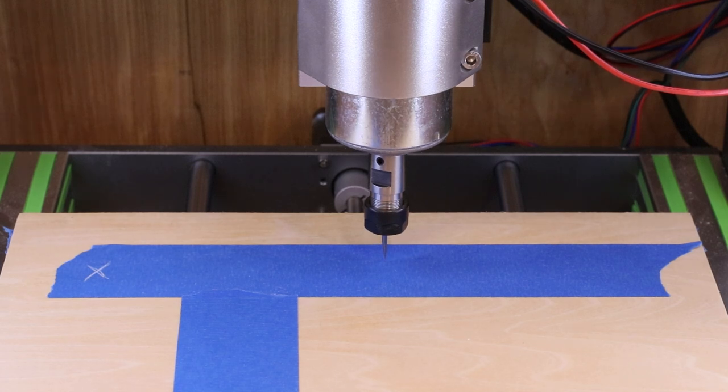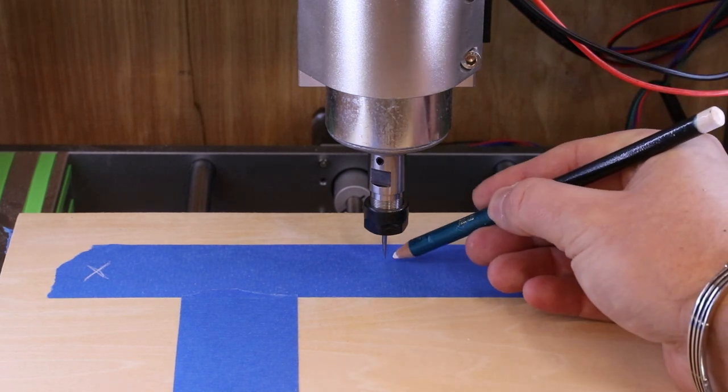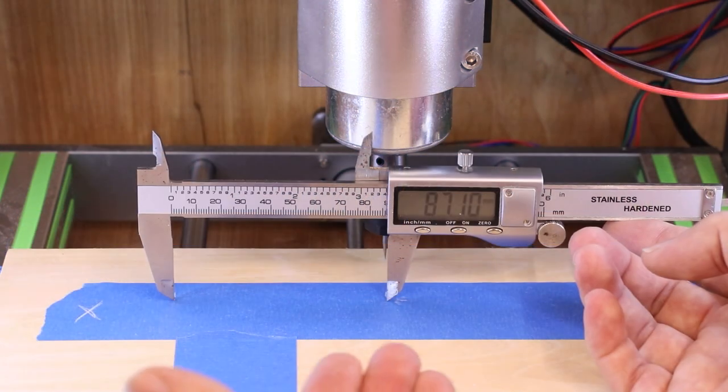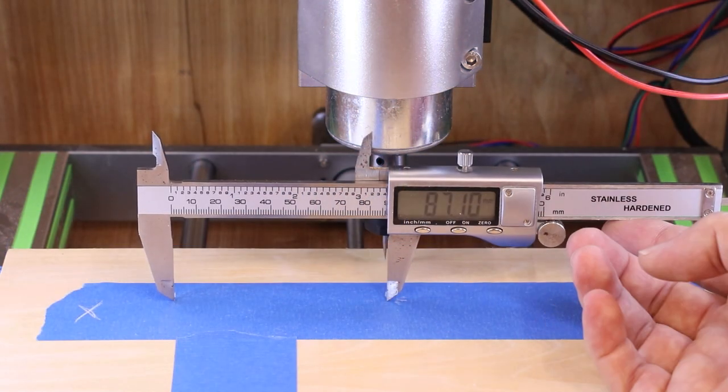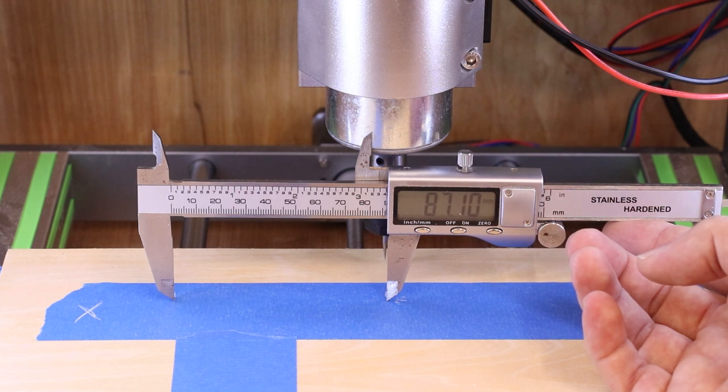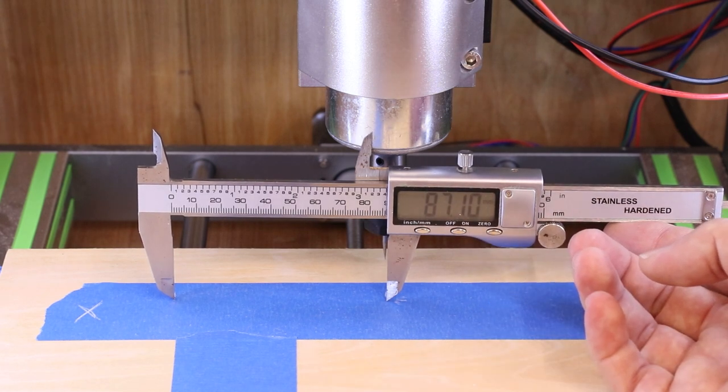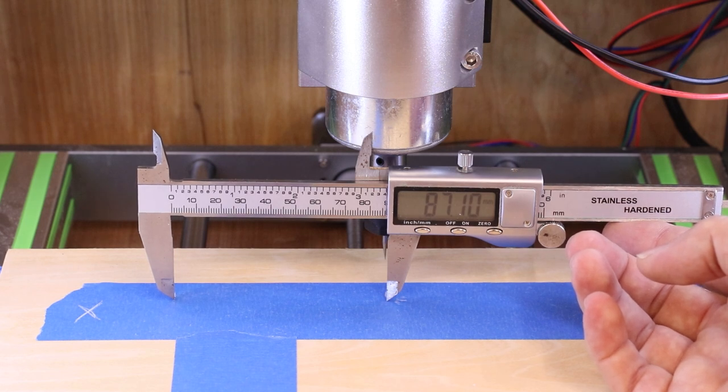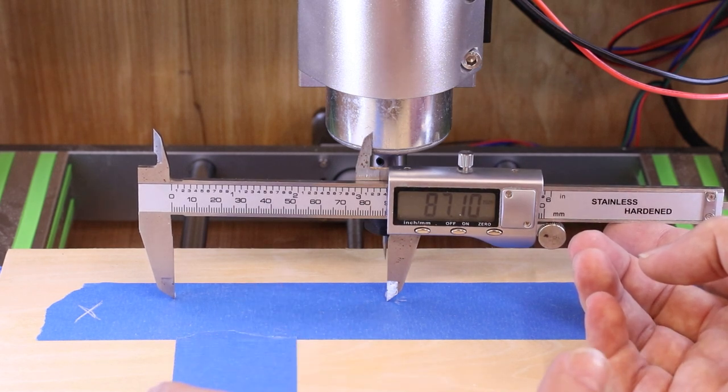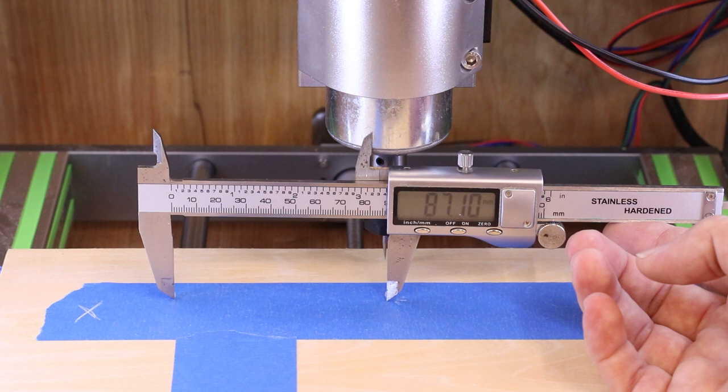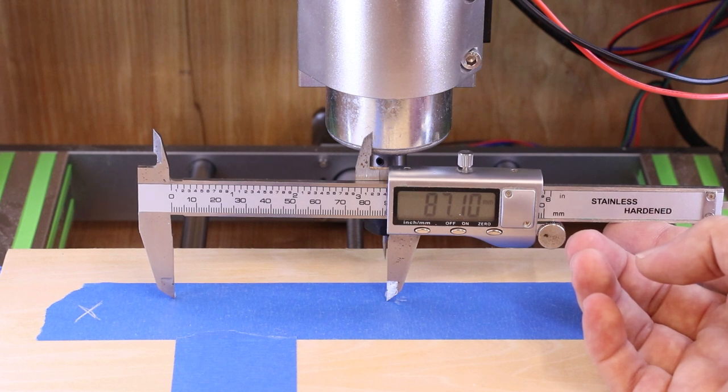I've brought the bed slightly forward to give me breathing room between the space under the spindle. I'll put the calipers on the two indentations that we made. I've got a reading of 87.10 or 87.1 millimeters. This is the new figure we'll need for the calculation. We sent that to 100 millimeters travel and it's only come out at 87.1, so we need to adjust those settings.